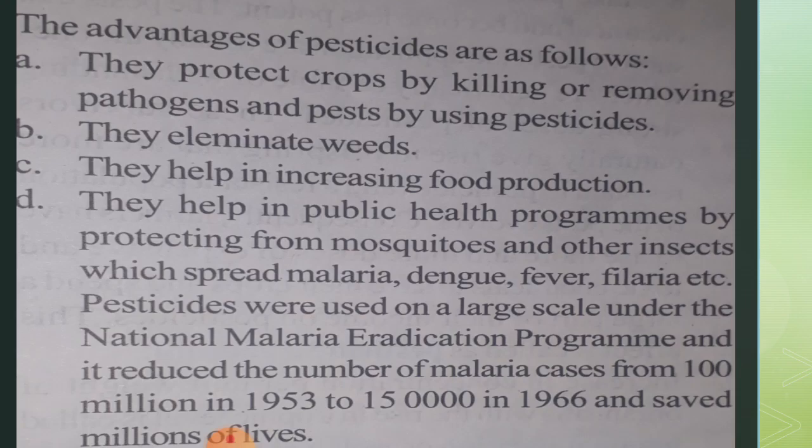The yield of various agricultural products can be increased further if crop plants and their products are protected from a large number of animals and insects called pests. Pests are insects or animals which damage our crops. Approximately 30% of the agricultural produce is lost due to pests. Pests are considered the greatest enemies of modern agriculture because they cause a lot of loss.